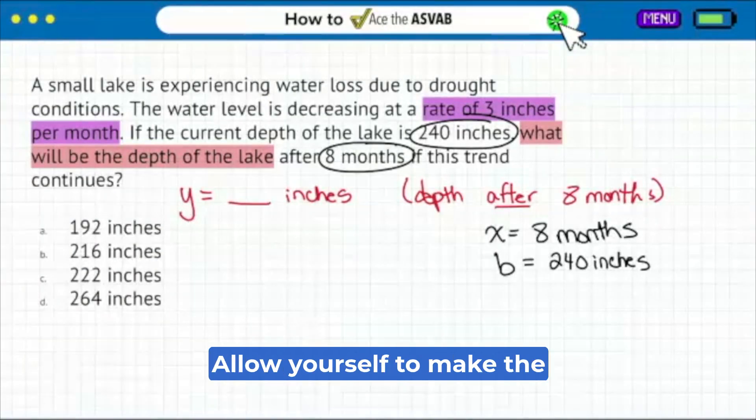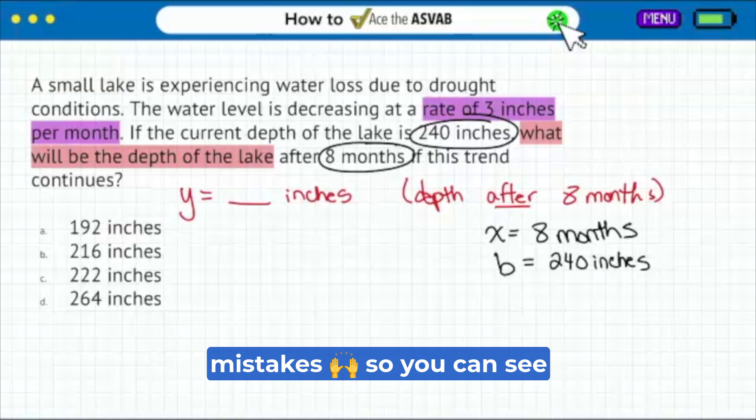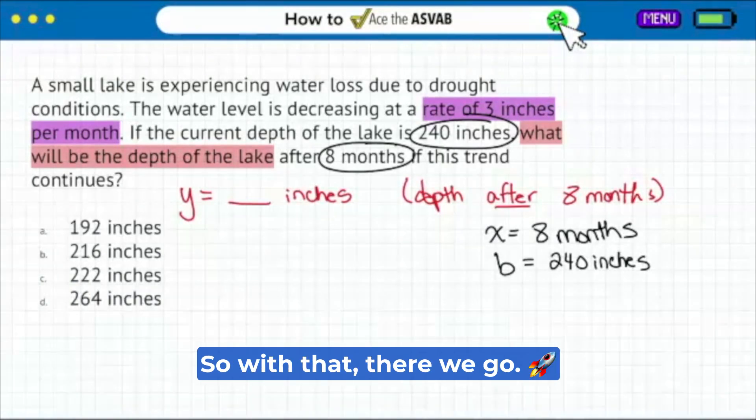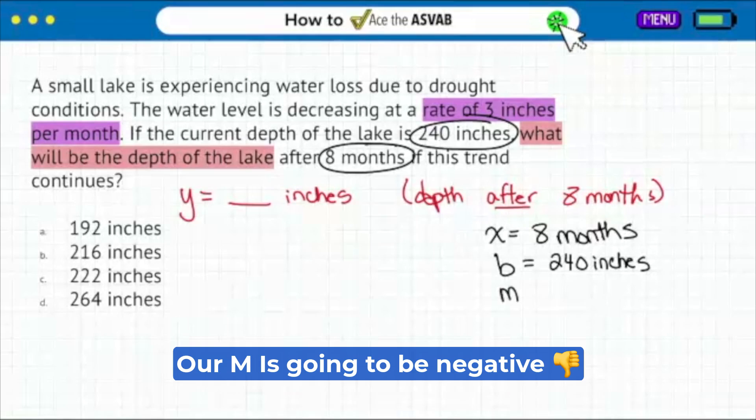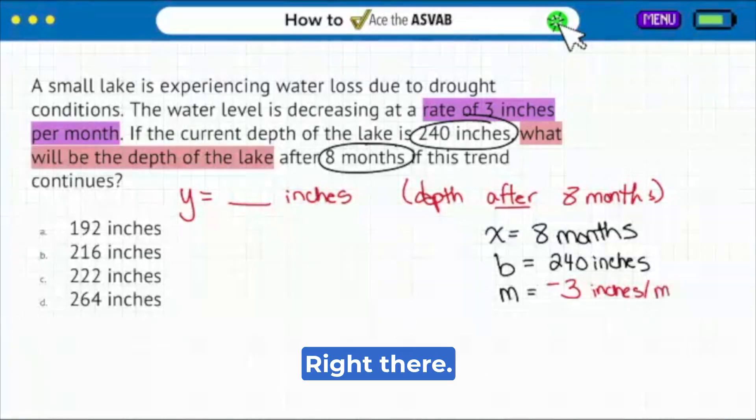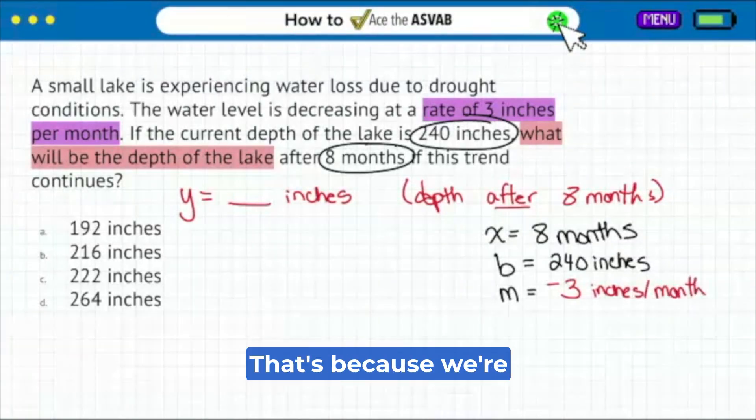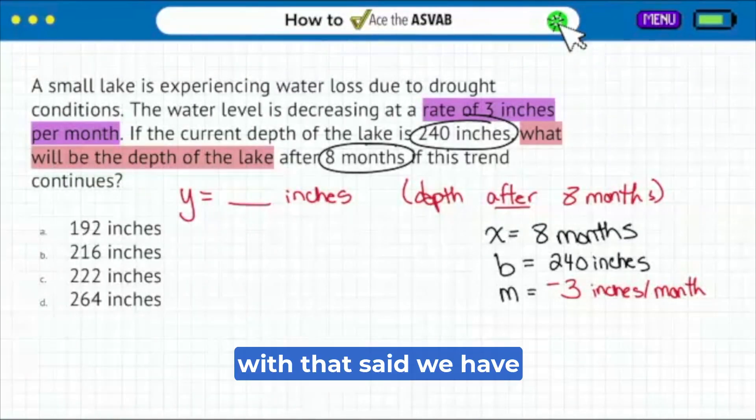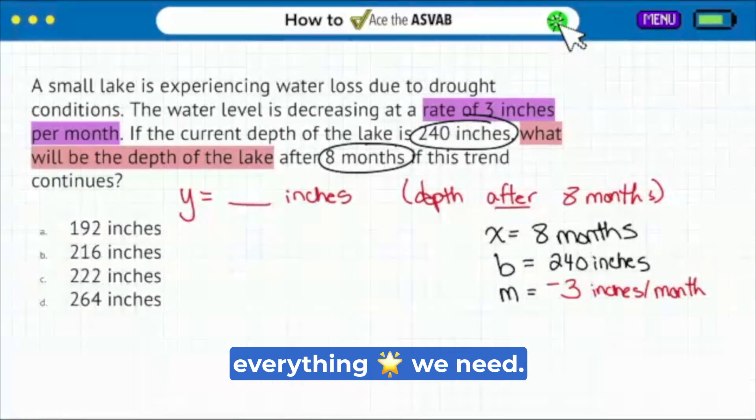That's what it's all about. Allow yourself to make the mistakes so you can see how not to make them. That's what I was saying in the beginning of class. So with that, our m is going to be negative three inches per month. And it's because we're losing water. So with that said, we have everything we need. We'll plug it right in and we're good.